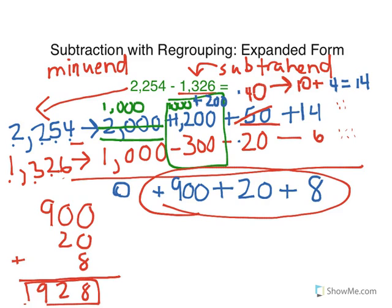However, I'm going to check my work. I can take the difference, which is 928, and add it to the subtrahend. And when I add the difference to the subtrahend, it should give me our first number here, the minuend. So if we get that number, then we did it correctly. Let's check it out.